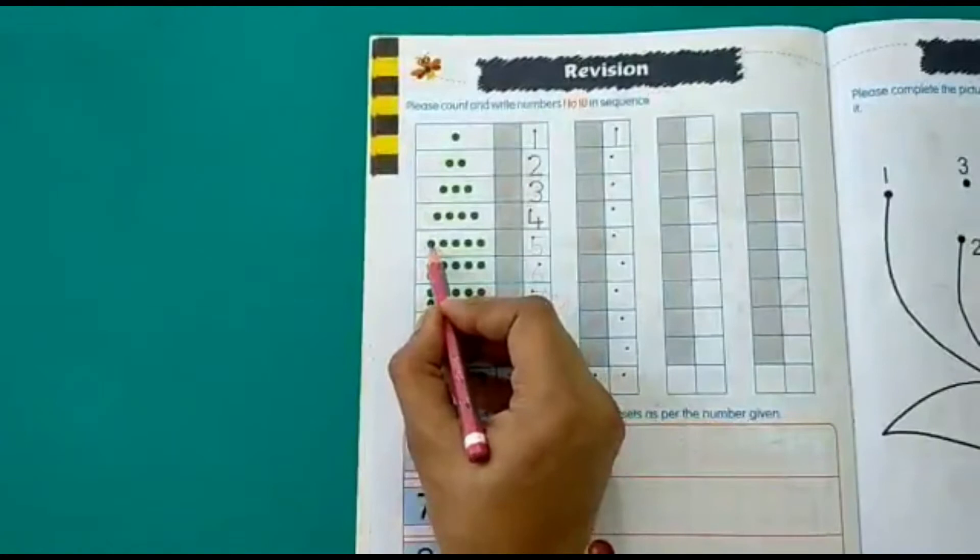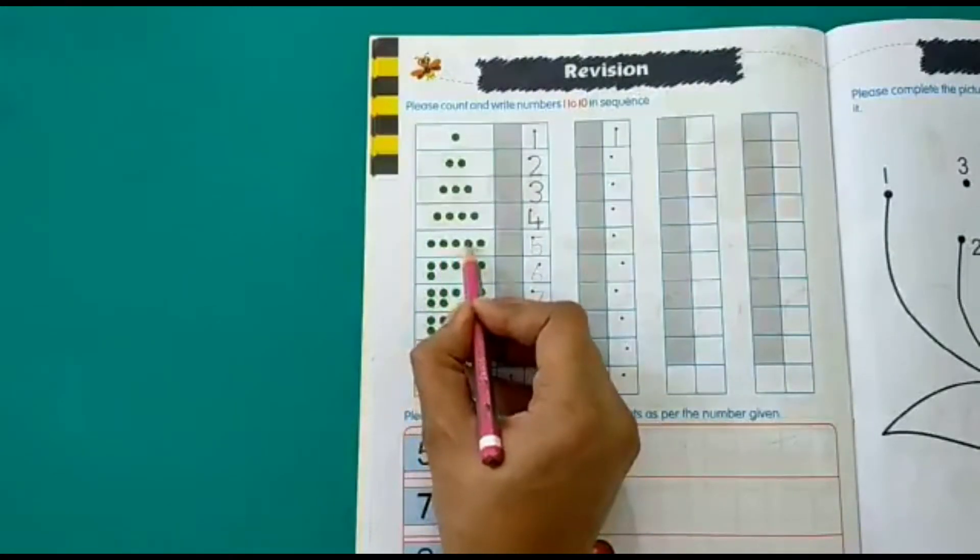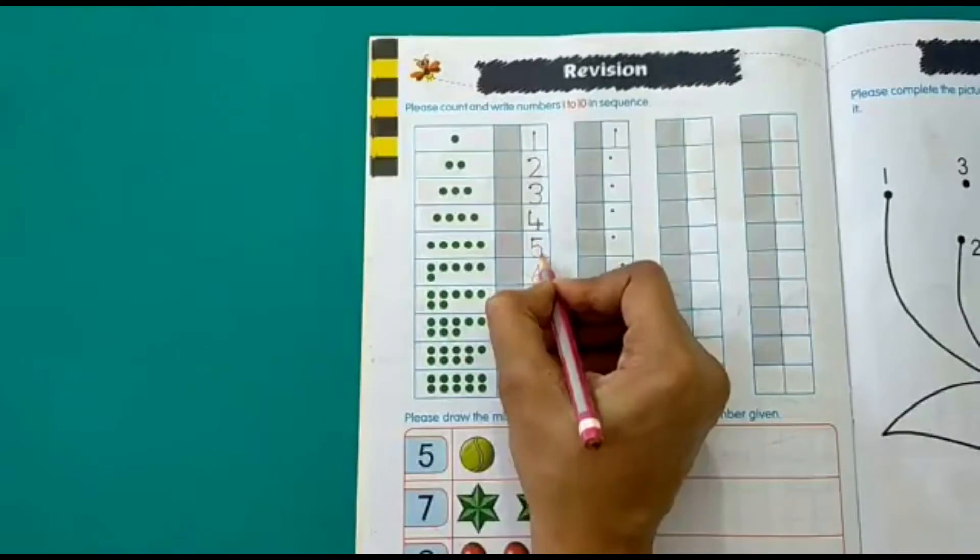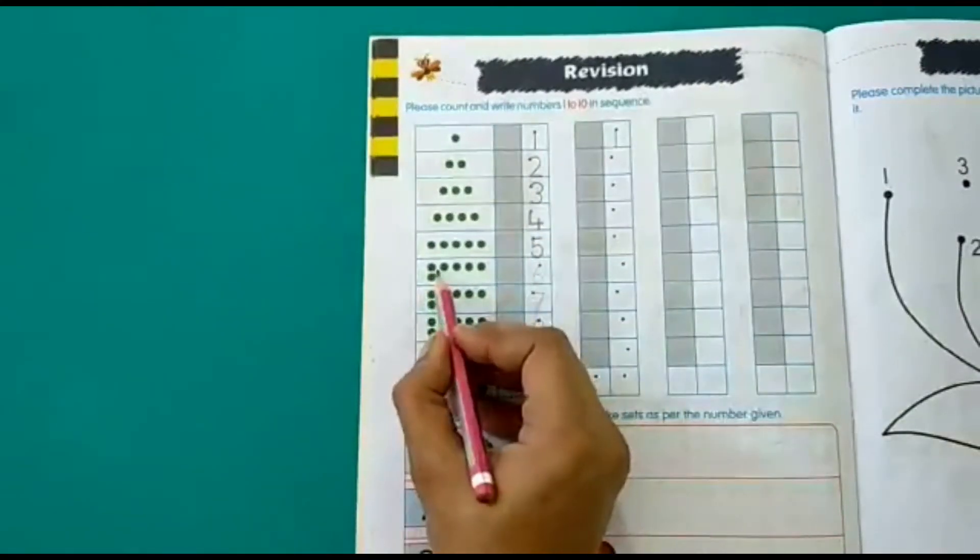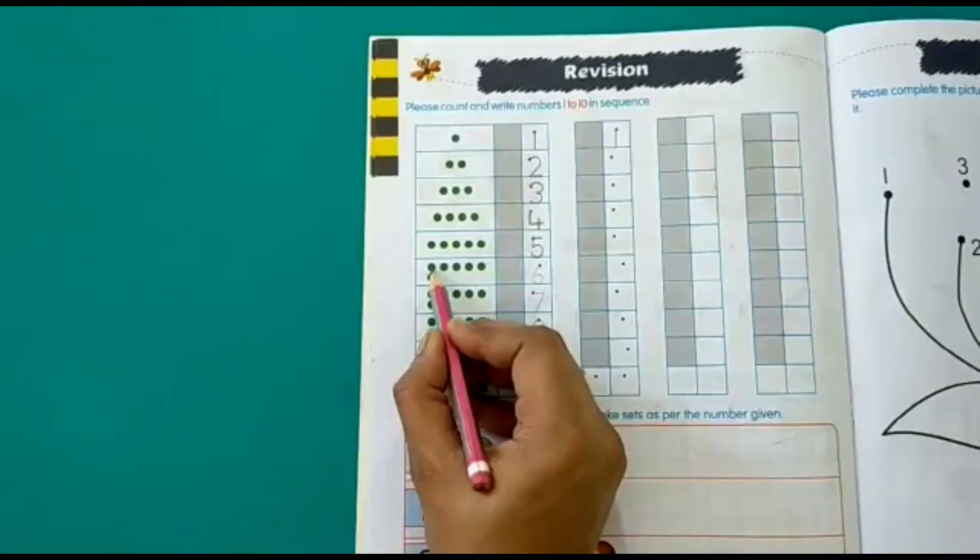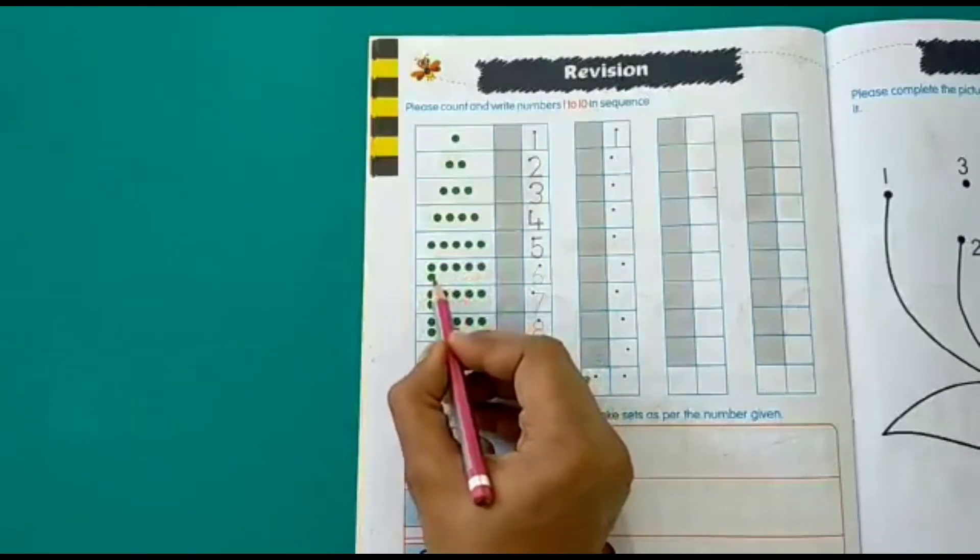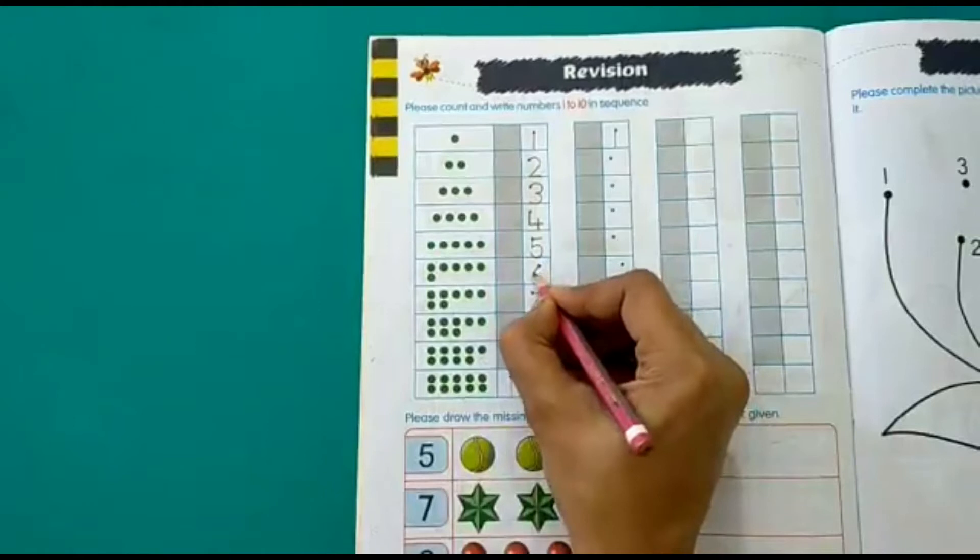Let's count the beads here. 1, 2, 3, 4, 5. So we will write 5. Next count. 1, 2, 3, 4, 5 and 6. So we will write 6.